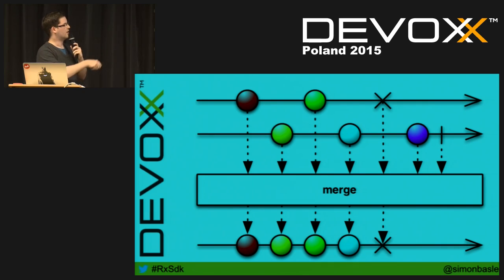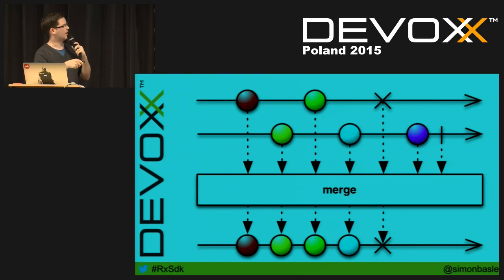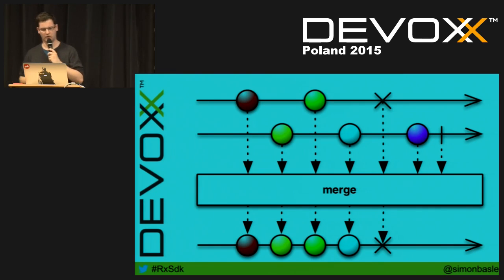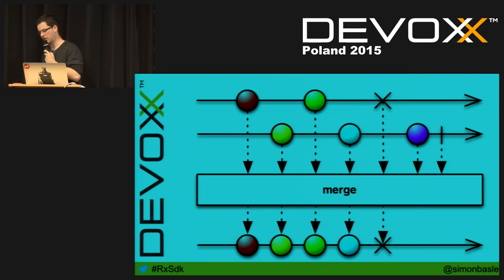For example, instead of merge you can use concat, which emits all items in observable A first, then all items in observable B. There are a lot of options, and then you start seeing interesting advanced operators like retry.